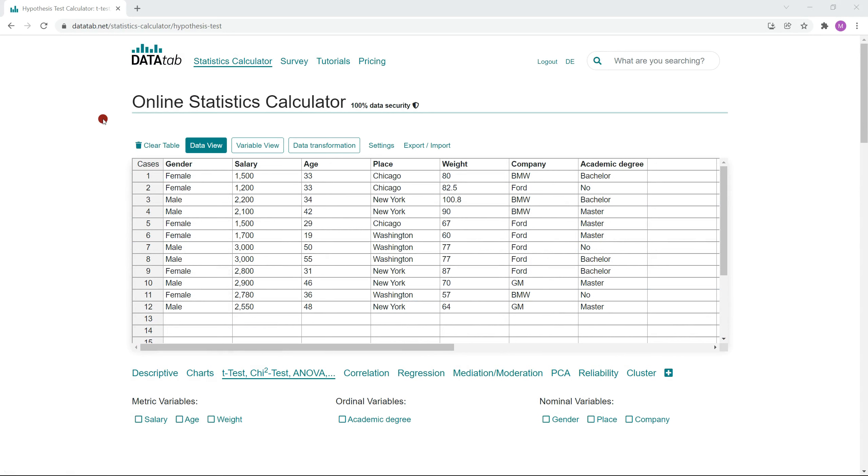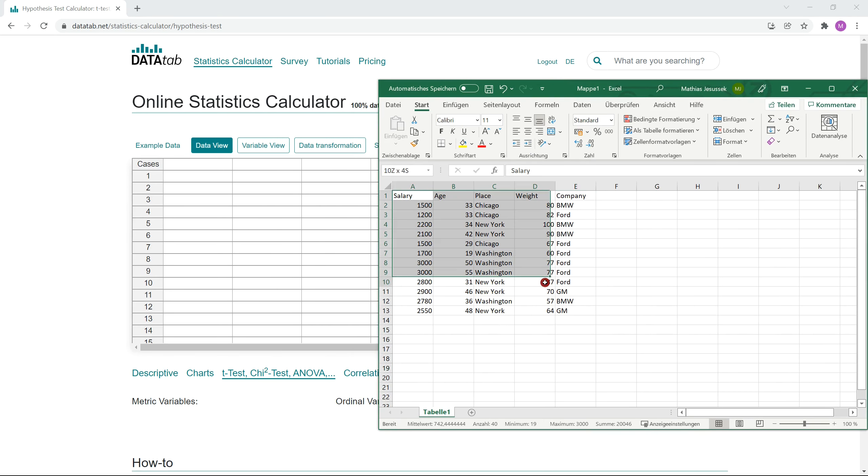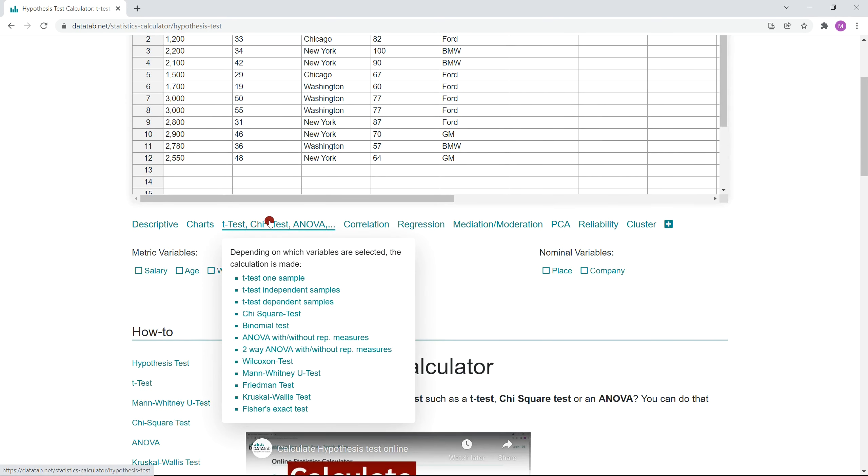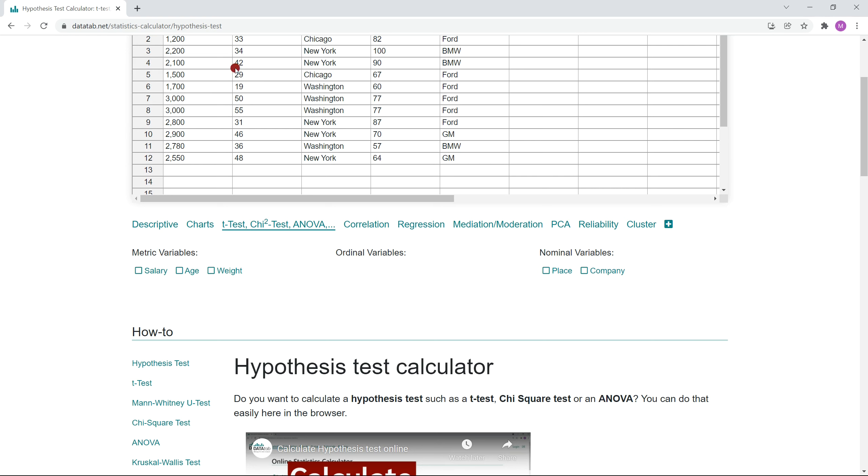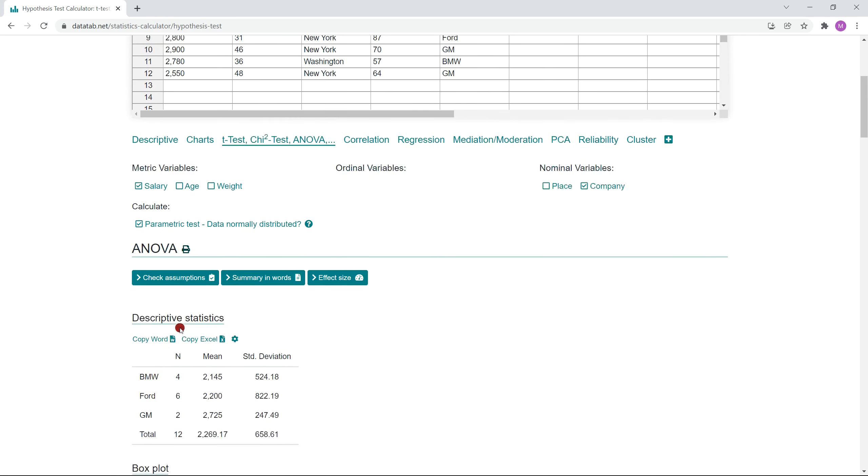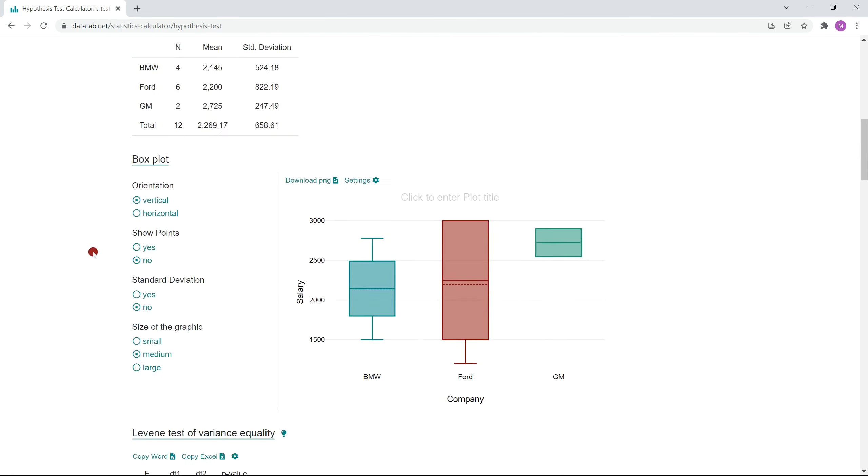To calculate an analysis of variance with DataTap, just visit datatap.net. You can find the link in the video description below. Then you copy your own data into this table and click on this tab. Under this tab, you will find a variety of hypotheses tests. Here below, you can see the variables you copied into the table. Depending on which variables you select, DataTap will calculate the appropriate hypothesis test. If you click on a metric variable and a nominal variable with at least three characteristics, DataTap calculates an analysis of variance.